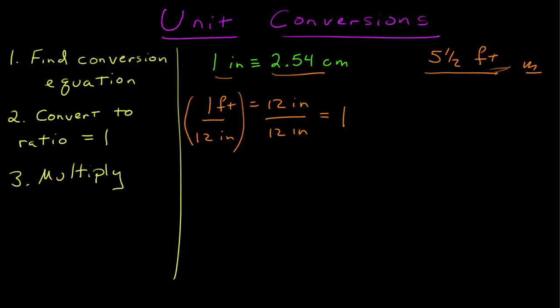My problem is, if I multiply 5.5 feet by 1 foot over 12 inches, you'll see one of the pitfalls we often run into when we're doing unit conversions. I have the wrong version of the number 1. These feet multiplies by feet gives me feet squared over inches, which is not what I want at all.